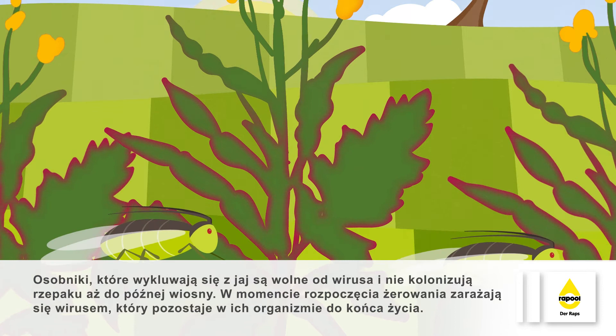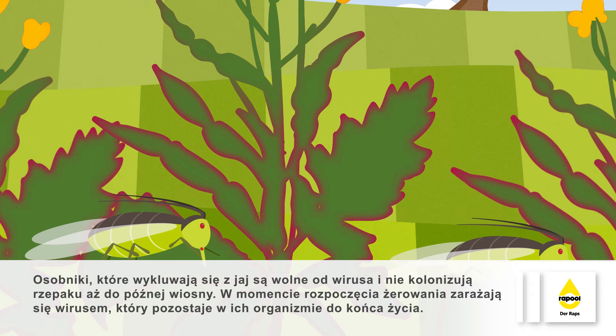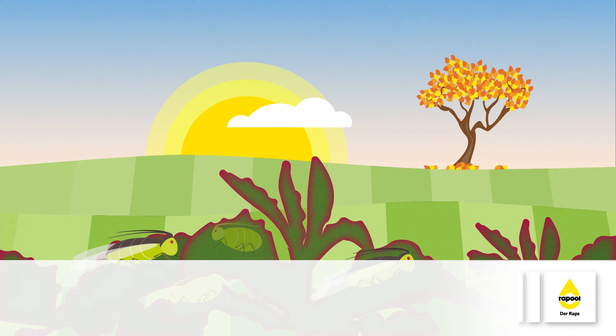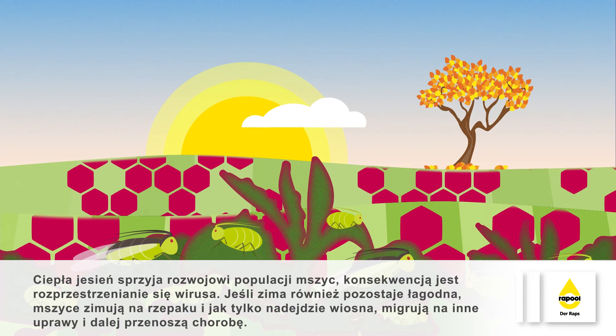As soon as they suck on virus-infected plants, however, they absorb the virus and are infected for the rest of their lives. If the autumn is warm, large populations of unwinged aphids develop, spreading the virus extensively.